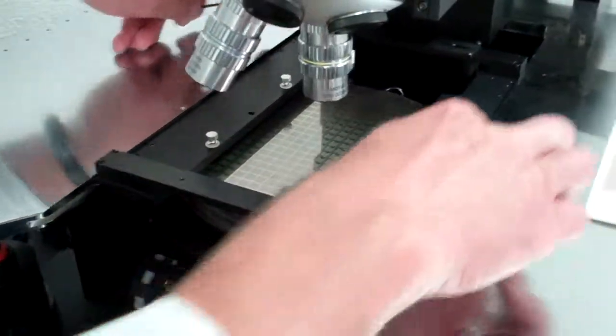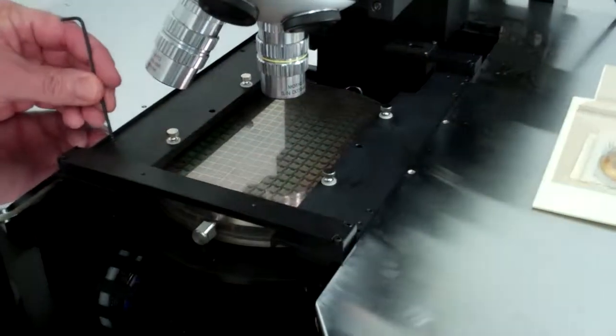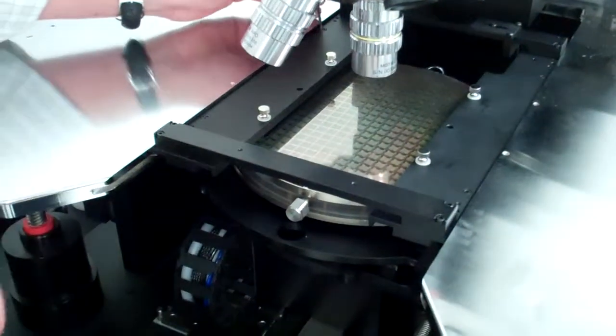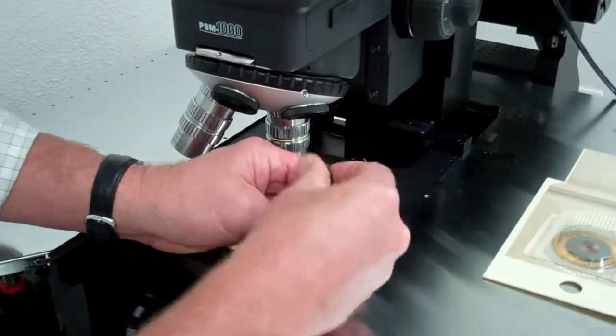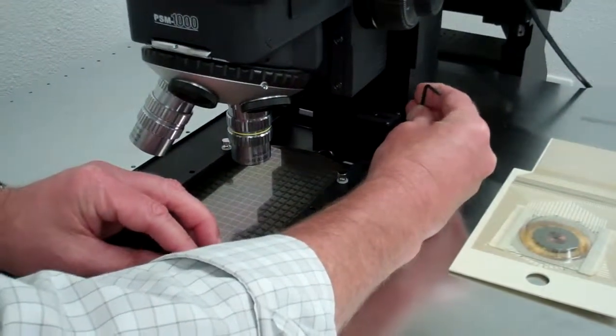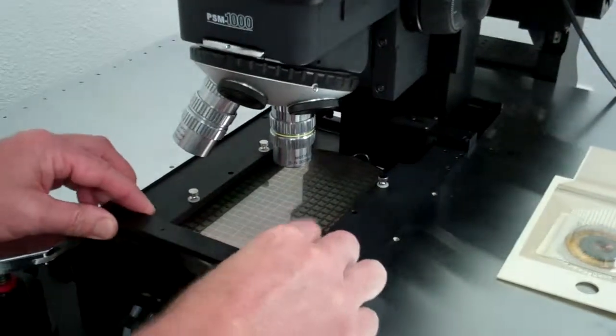The four screws on the outside, when you tighten them, will lock the Pro Card adapter into the platen slot and lock it in place.